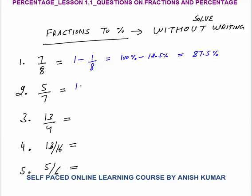5 by 7: we can say this equals 1 minus 2 by 7. 1 is 100%. I know 1/7 is 14.28% from the previous lesson, so 2/7 will be twice of that — 28.56%. Subtracting: 100 minus 28 is 72, minus 0.56 gives 71.44% as the final answer.